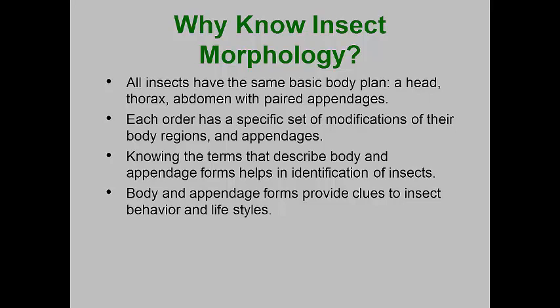Knowledge of insect forms is important because all insects are derived from the same basic body plan. All have the head, thorax, and abdominal tagmata or body regions. The head has paired appendages used for sensing the environment and for eating. The thorax has three pairs of legs, and most adult insects also have two pairs of wings, both used for locomotion. Orders of insects have specific modifications of the tagmata and appendages which help define those orders. Knowledge of the terms used to describe these modifications helps when using taxonomic keys, and the modifications often give us clues as to the functions that each appendage performs.